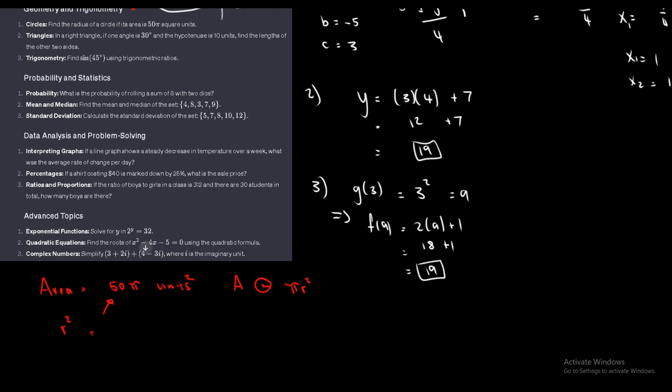To solve for r, we take the square root of both sides. So r equals the square root of 50, which simplifies to 5 root 2, or approximately 7.1. Keep in mind that r can technically be positive or negative, but since we're working with a side length, we use the positive value.